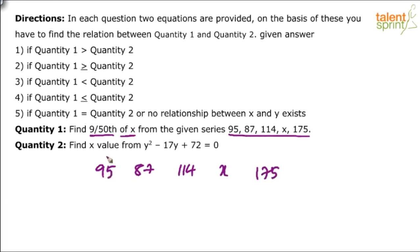Compare. See, interestingly, this is like a series where it's decreasing and increasing alternatively. 95 decreases to 87, increases to 114, then probably decreases and increases. So basically some alternate additions and subtractions here. So what do we do? Find out the differences first.